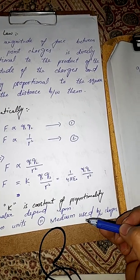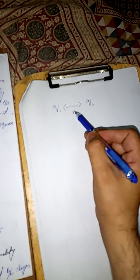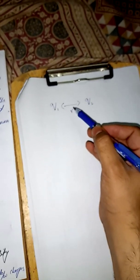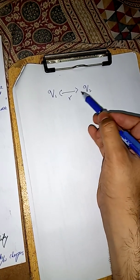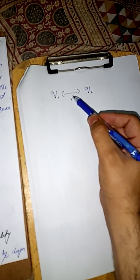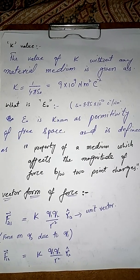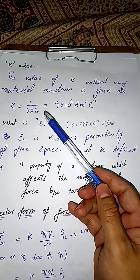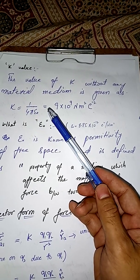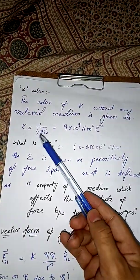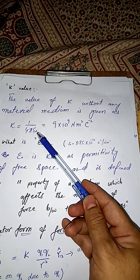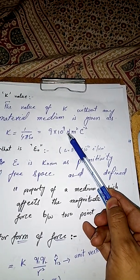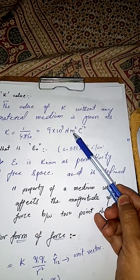For example, if the medium between the two charges is air, the value of k will be different than if we use any insulating material between the charges. Without any material medium — that is, if the medium between the charges is air or vacuum — the value of k is 1 over 4πε₀, or numerically 9 × 10⁹ N·m²/C², where newton is used for force, meter for distance, and coulomb for charge.